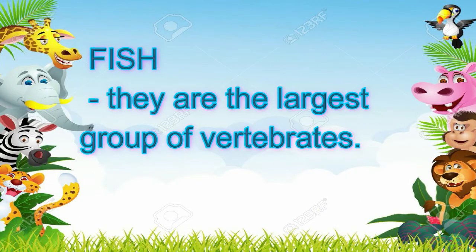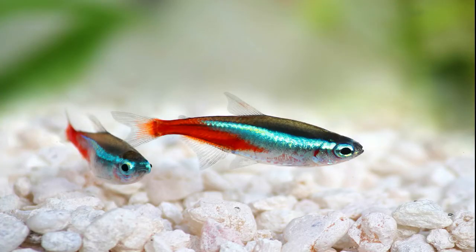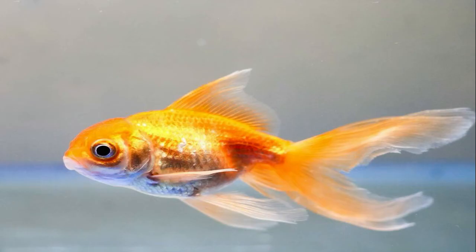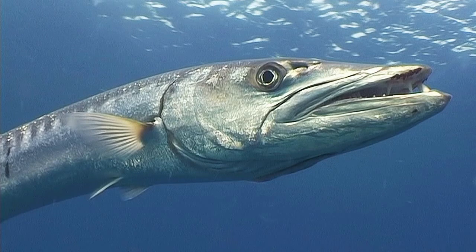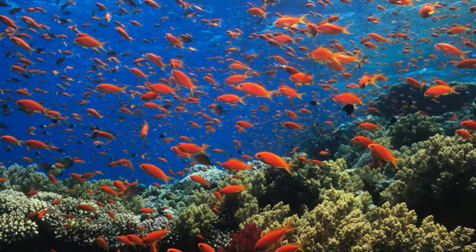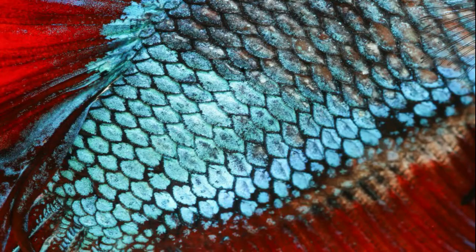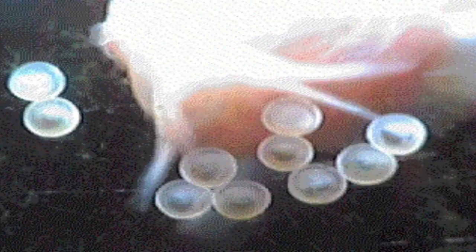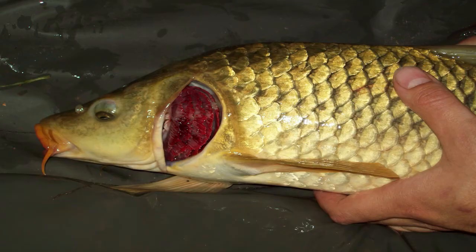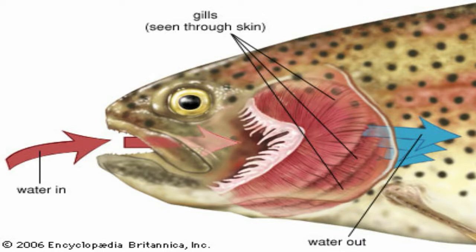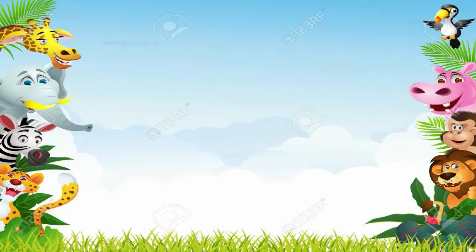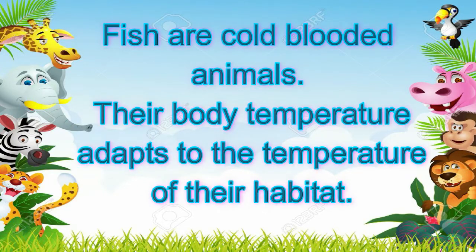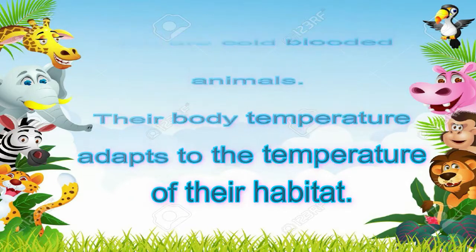Fish are the largest group of vertebrates. They come in many sizes and shapes, and their body parts are suited for life in water. The bodies of most fish are covered with scales, and they reproduce by laying eggs. Fish breathe underwater using gills, which enable them to take in oxygen from water. Fish are cold-blooded animals, meaning their body temperature adapts to the temperature of their habitat.